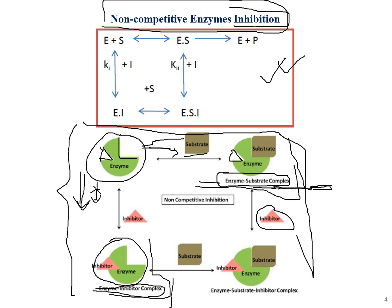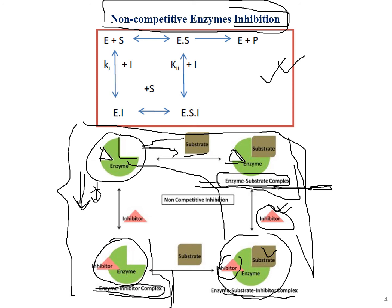That remaining free site is then occupied by the inhibitor, as is expected in some sort of inhibition. So now the enzyme-substrate complex gains the inhibitor, forming a trio — the enzyme-substrate-inhibitor (ESI) complex. Coming from the second path, when the inhibitor is attacked first, an enzyme-inhibitor complex is formed.